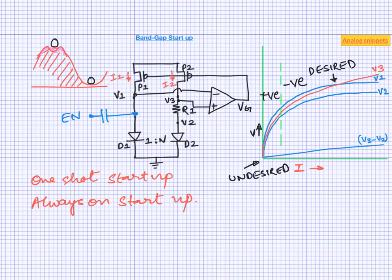Always on startup schemes also inject current at appropriate point in the bandgap circuit. Let's briefly consider two such points. One obvious point is to inject current into V1. Now this current itself can be generated by a very simple diode resistor circuit which is guaranteed to start. A second point can be the output of amplifier. We want to pull the VG down so that P1 and P2 turn on and inject current in these two branches.